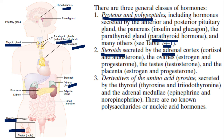The second category of hormones are steroids, secreted by the adrenal cortex, ovaries, testes, and placenta. From the adrenal cortex we have cortisol and aldosterone, also called corticosteroids. From the ovaries we have estrogen and progesterone — the female sex hormones. From the testes we have testosterone — the male sex hormone. From the placenta we have estrogen and progesterone as well.